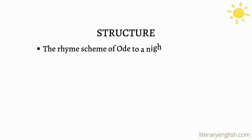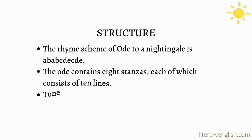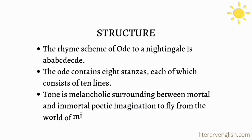Coming towards the structure of the poem, the rhyme scheme of 'Ode to a Nightingale' is ABABCDECDE. The ode contains 8 stanzas, each of which consists of 10 lines. The tone of the poem is melancholic, surrounding between mortal and immortal poetic imaginations, to fly from the world of miseries.